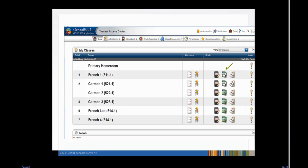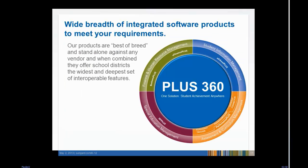Once report card marks are entered, the Grade Reporting icon is overwritten with a checkmark. In this lesson, we've learned to load Interim Progress Marks from Gradebook, add a free text comment, use the spell checker, and create an individual IPR.